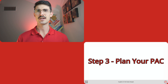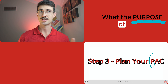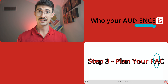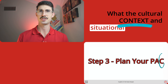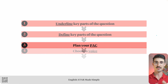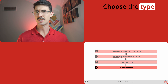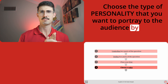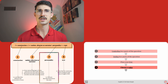Step number three: plan your PAC. Planning your PAC involves deciding three things. Firstly, what the purpose of your text is. Secondly, who your audience is. Thirdly, what the cultural context and situational context is. Step number four is choose a voice. Here, you should choose the type of personality that you want to portray to the audience by writing down a few adjectives, per element three of the definition of voice.